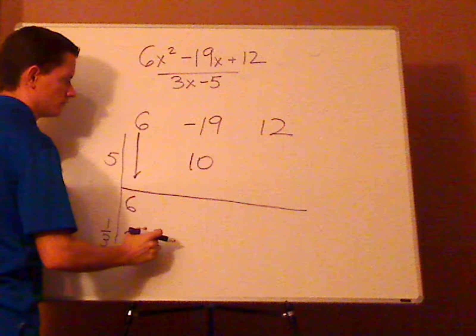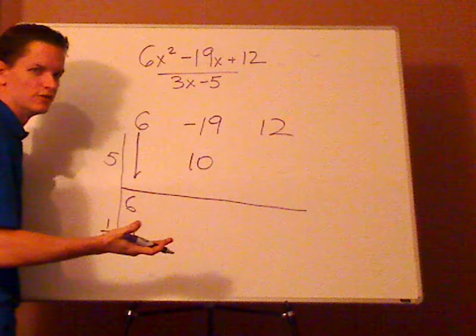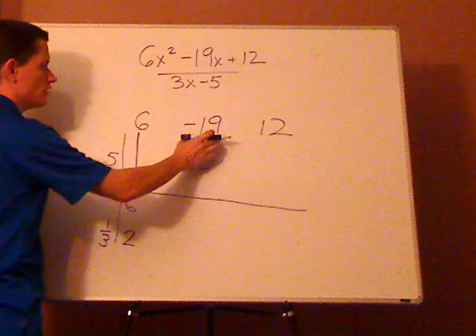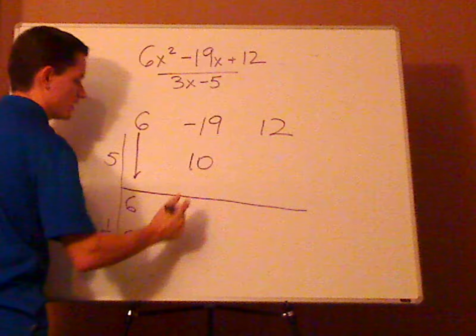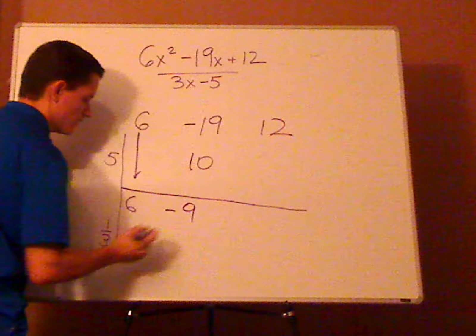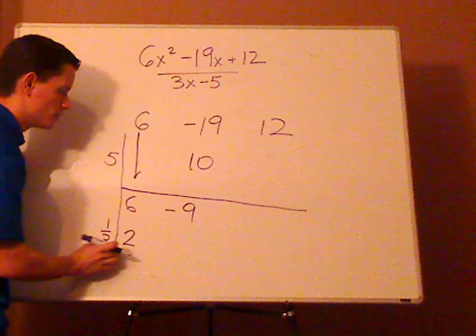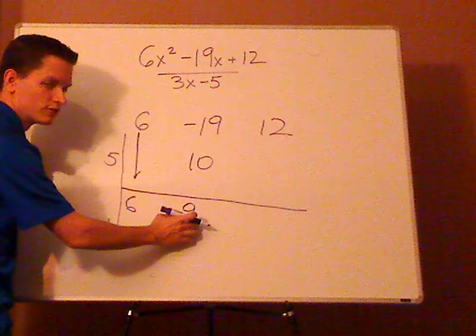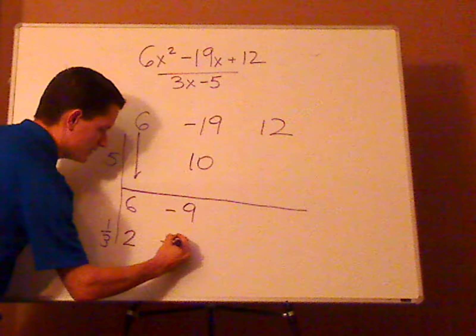Then add, like what you would typically do when you're doing Synthetic Division. So negative 19 plus 10 is negative 9. Take 1 third of that, just multiply it by 1 third. That's negative 3.